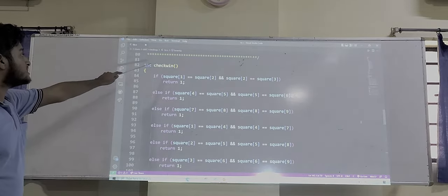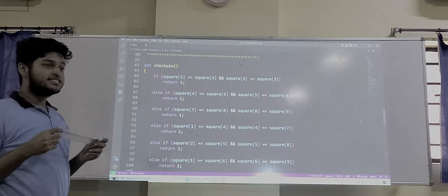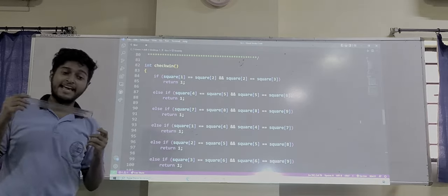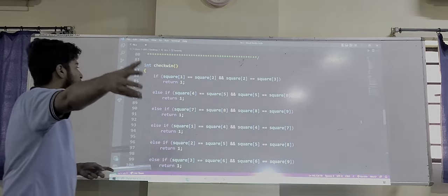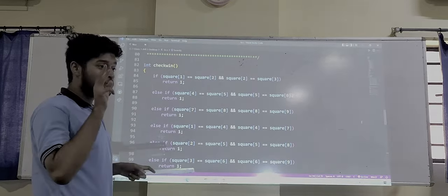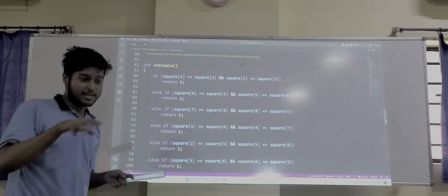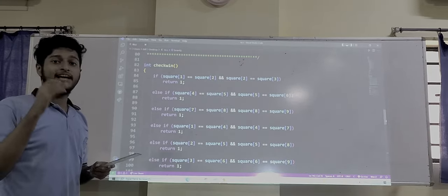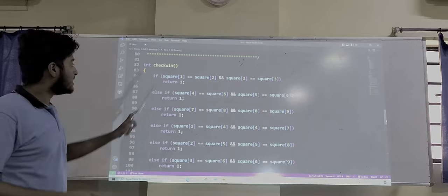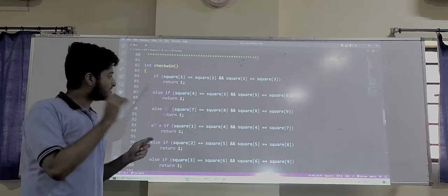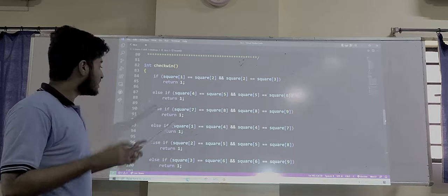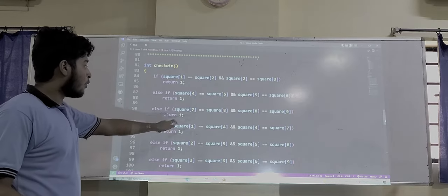Here we are going to talk about the check win function. By the check win function, we are going to see if anyone wins. Here we will see if three rows or three columns or diagonally three are same, that means there is a winner. If 1, 2 and 3, means diagonally three are same, or column-wise if 1, 4 and 7 are same, or if 1, 5 and 9 cross-wise are same, that means there is a winner.